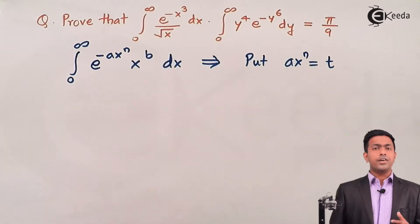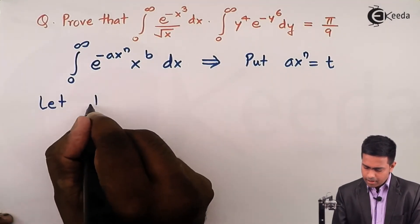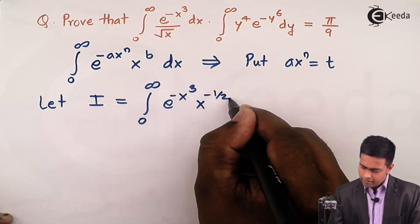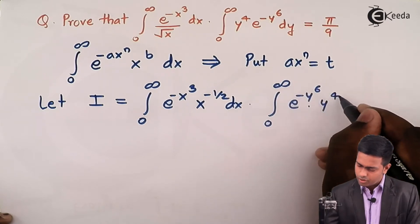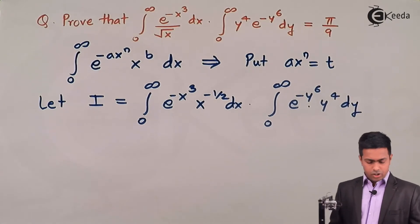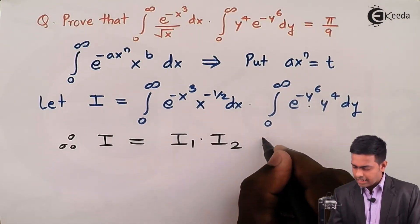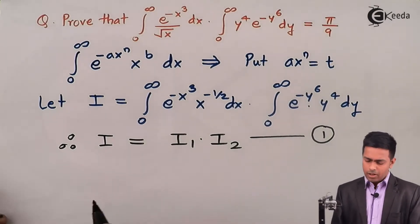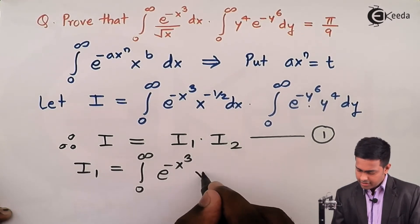Since we have two different integrations, we consider the first as I₁ and the second as I₂, then solve them individually. So I = I₁ × I₂ — this is equation (1). I₁ is the integration from 0 to infinity of e^(−x³) · x^(−1/2) dx, and I₂ is the integration from 0 to infinity of e^(−y⁶) · y⁴ dy.